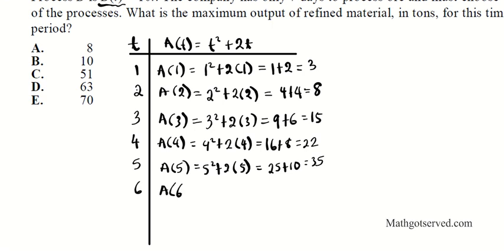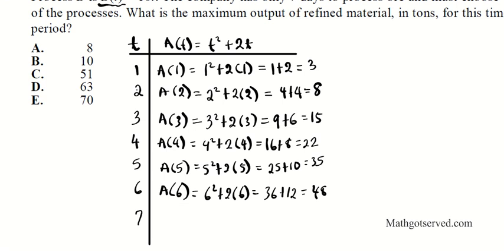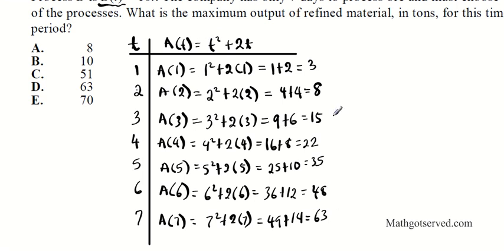Continuing: A(6) = 36 + 12 = 48, and A(7) = 49 + 14 = 63. You can see the output keeps increasing, and the maximum output using process A is 63 after 7 days.